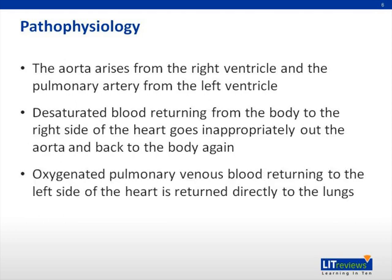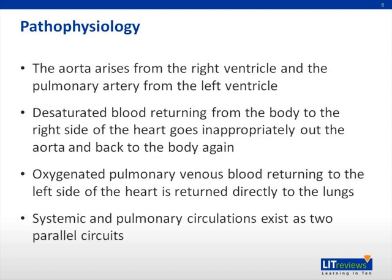Consequently, oxygenated pulmonary venous blood returning to the left ventricle is returned directly to the lungs. This creates a major problem with both the systemic and pulmonary circulations existing as two parallel circuits, resulting in systemic cyanosis because the deoxygenated blood returning from the body is pumped right back to the body before receiving oxygen from the lungs.